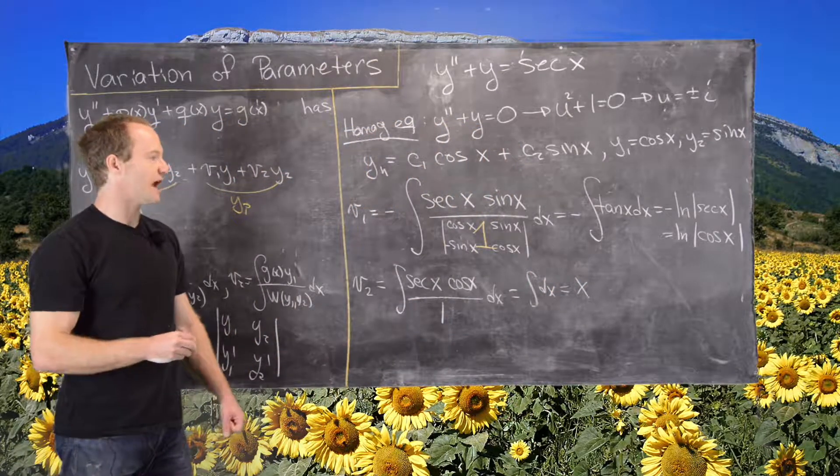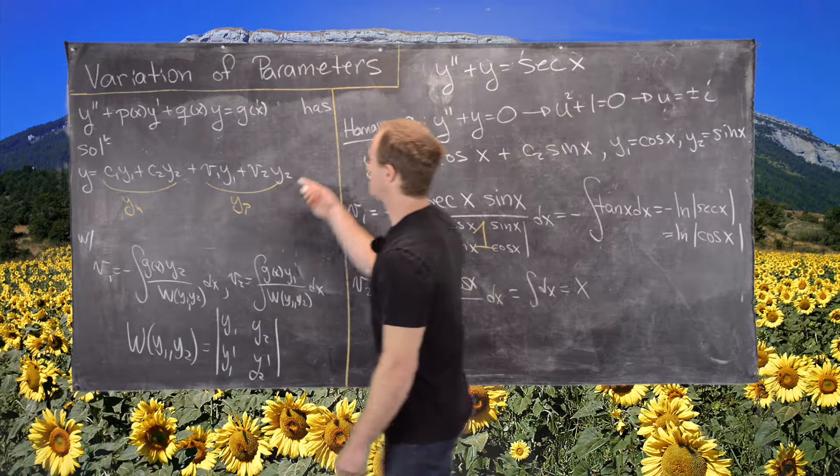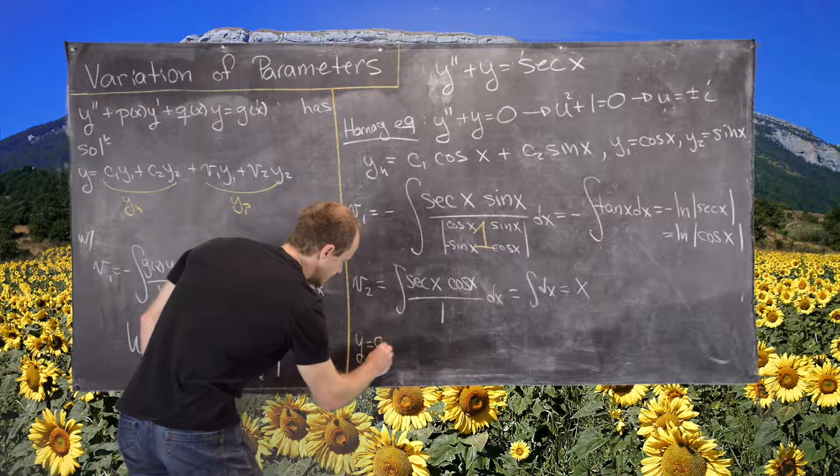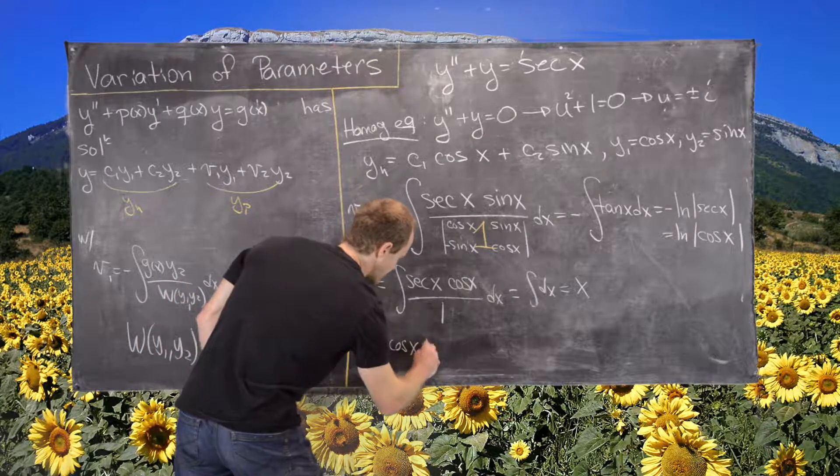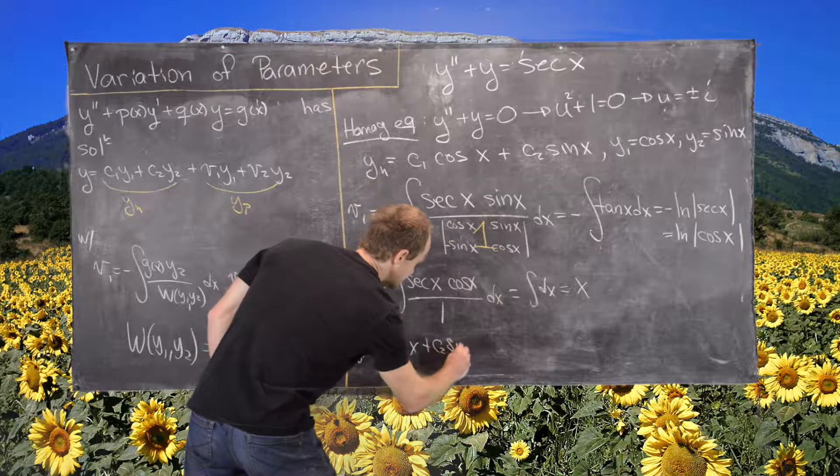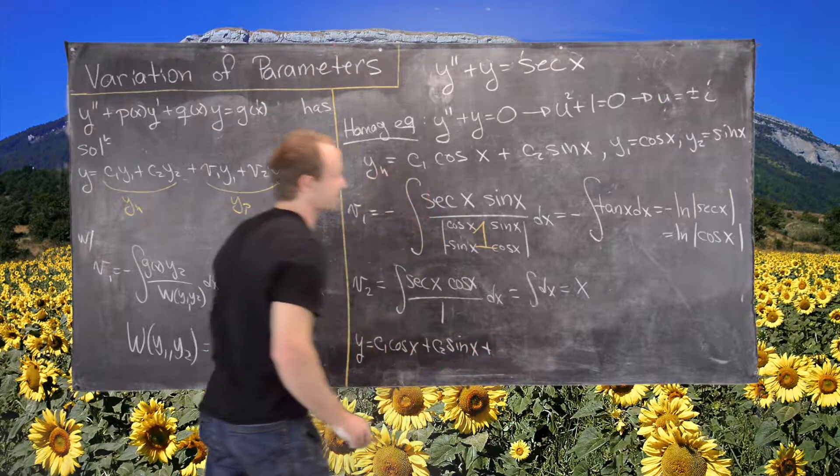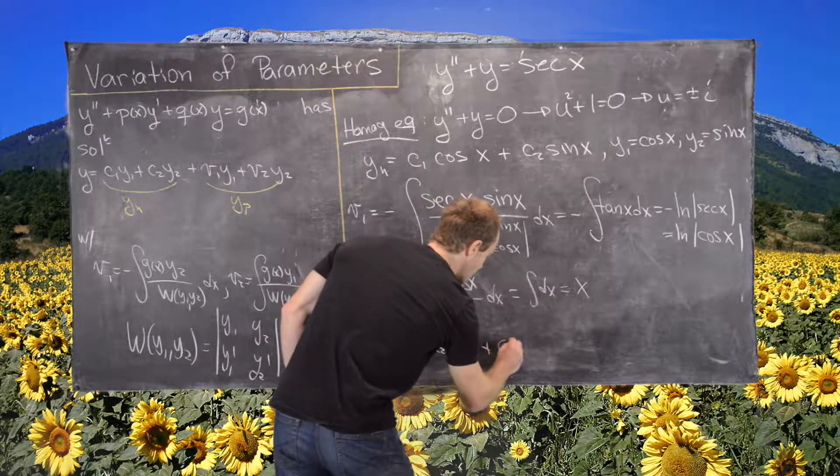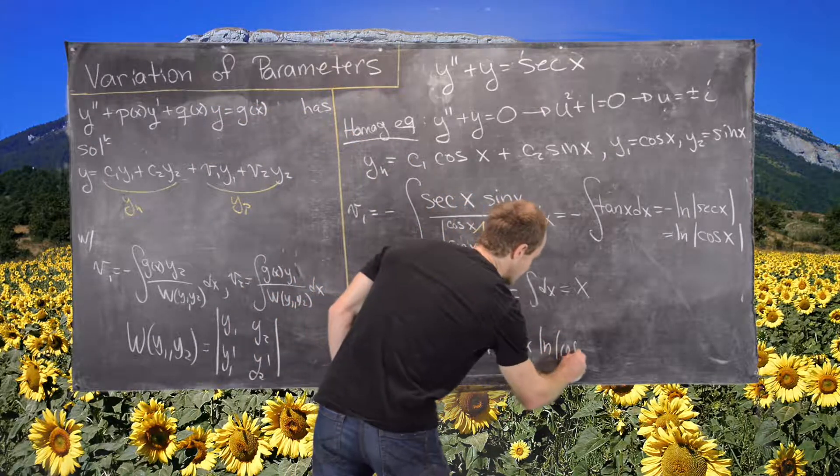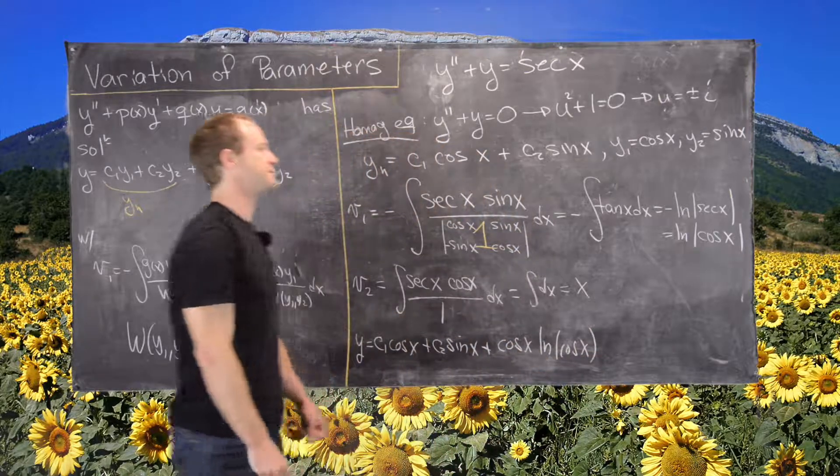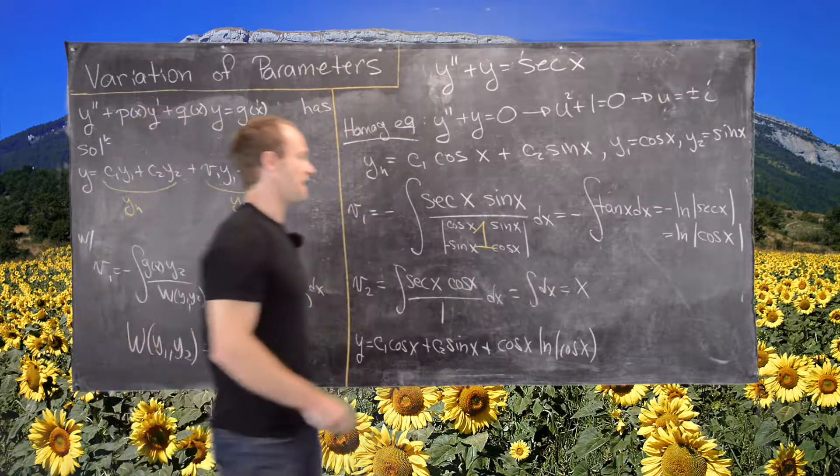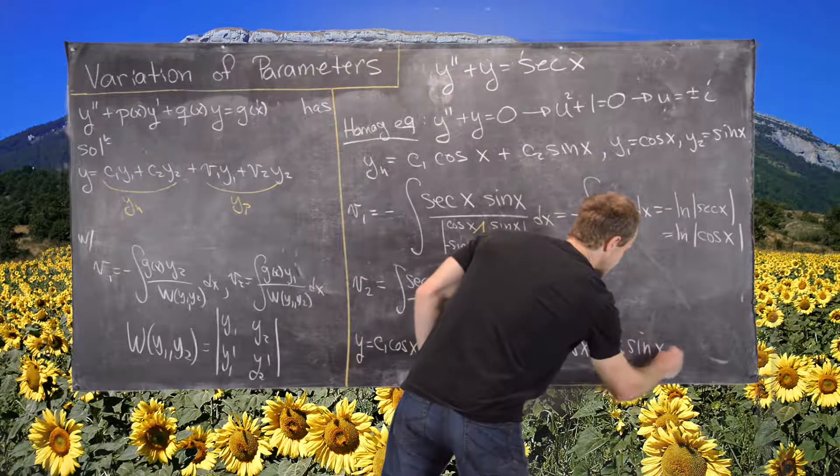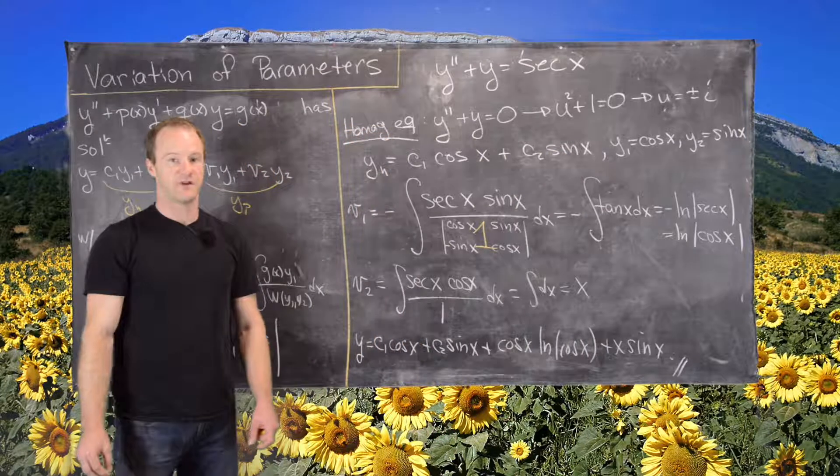So now we can use this form of a general solution to write down our general solution. So that will be c1 cosine x plus c2 sine x plus v1 times y1. So I'll write that as cosine of x times the natural log of cosine of x. And then v2 times y2. So that'll be plus x sine x. And that will be the final answer.